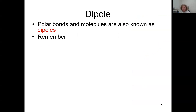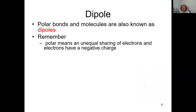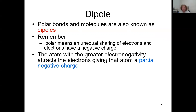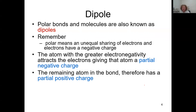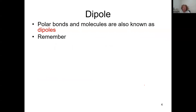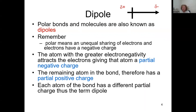A dipole — polar molecules and polar bonds are also known as dipoles. Polar means unequal sharing of electrons, and electrons have a negative charge. The atom with greater electronegativity attracts the electrons, giving it a partial negative charge, while the remaining atom in the bond has a partial positive charge. Each atom in the bond has a different partial charge — thus the term dipole, meaning two poles, one positive and one negative.